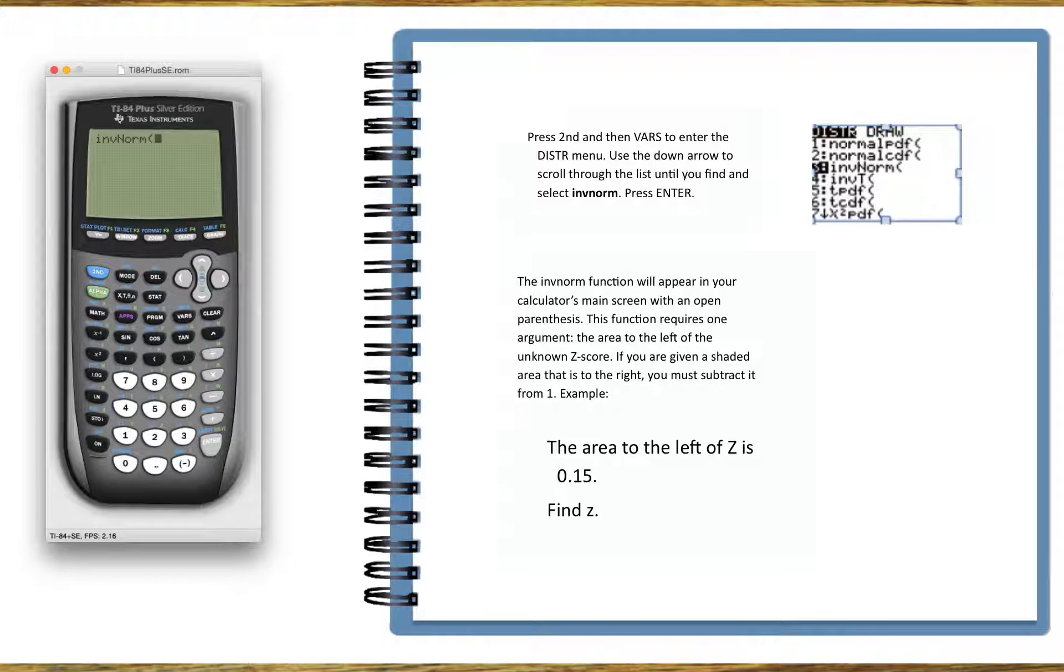All you have to enter now is 0.15, close the parenthesis, then press ENTER, and you will see the z-score is negative 1.04. Usually z-scores are rounded to two decimal places.